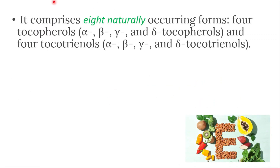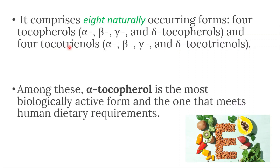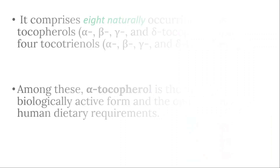Vitamin E comprises eight naturally occurring forms: four tocopherols and four tocotrienols. Among these, alpha-tocopherol is the most biologically active form and the one that meets human dietary requirements.